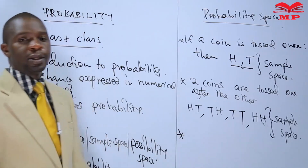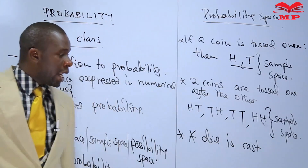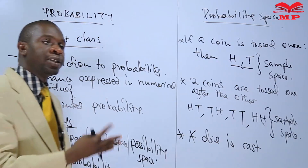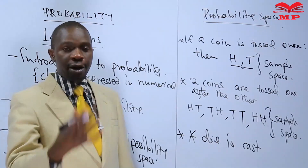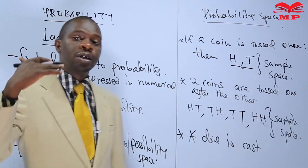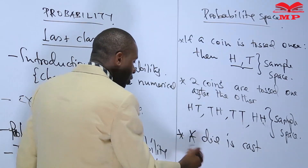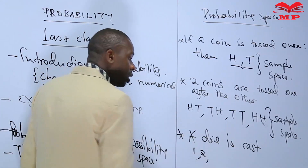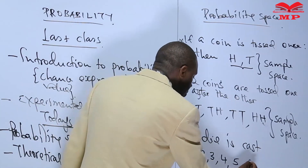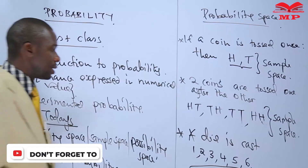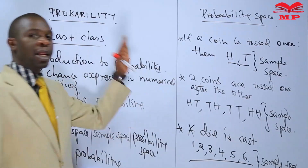Let us look at a third scenario — a die is cast. A die normally has six faces, each marked with dots: one face with one dot, another with two, the third with three, the fourth with four, the fifth with five, and the sixth with six dots. So when a die is cast, the possible outcomes are faces showing one, two, three, four, five, or six dots. These possible outcomes form the sample space, which is what we also call the probability space.